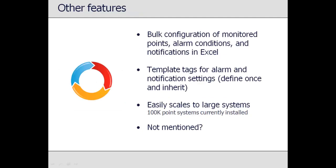Top View contains many features beyond those discussed in this presentation. This includes time-saving features such as bulk configuration of tags and limits, and the ability to inherit alarm and notification settings from template tags. For large systems, Top View scales extremely well — the same software is designed to work with 10 tags or 100,000 tags. Top View contains many smaller features, the result of a mature product with many years of development including interaction and feedback from customers.